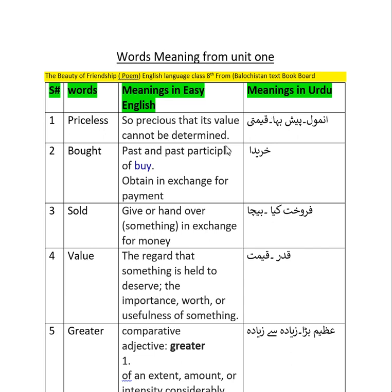Number 2 is 'bought' — past and past participle of buy; to obtain in exchange for payment. In Urdu: Kharida. Number 3 is 'sold' — to give or hand over something in exchange for money. In Urdu: Faroght kia, becha.